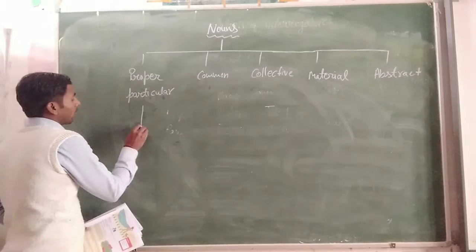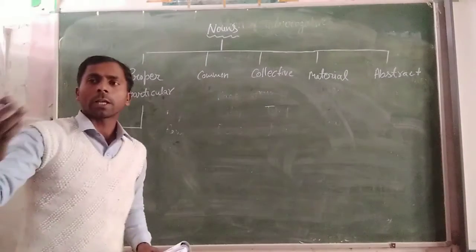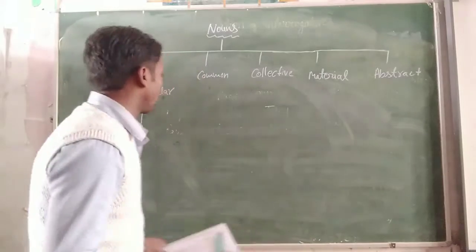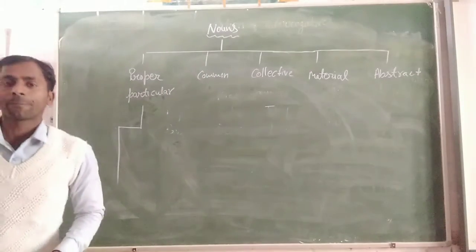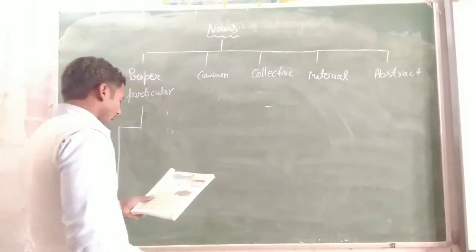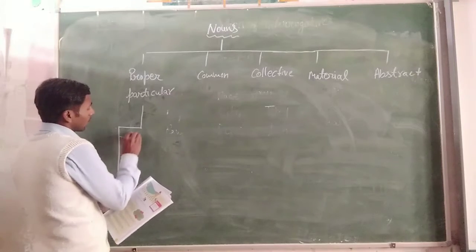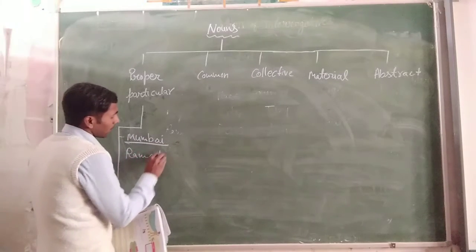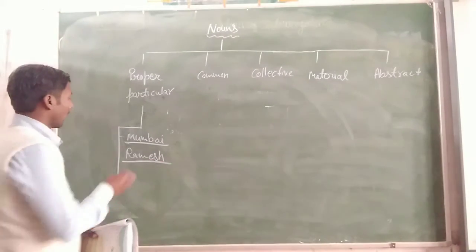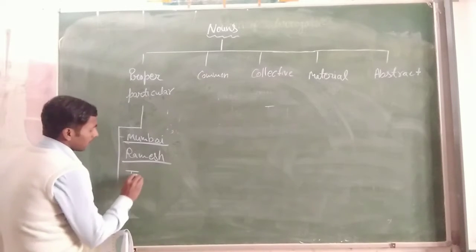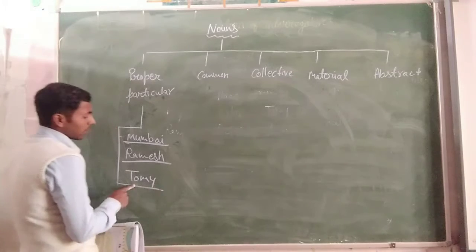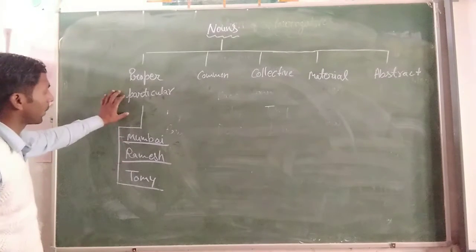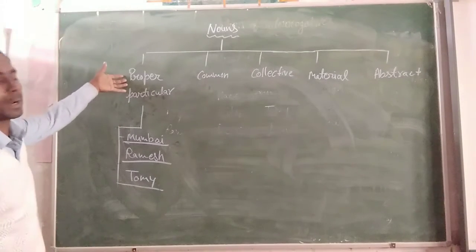Many persons are called by using the particular name of that person. Any person has a particular name. Like Mumbai — Mumbai is a particular name of a place. Namesh is a particular name of a person. Tommy is the particular name of an animal. So any particular name of a person, place, animal, or thing will be a proper noun.